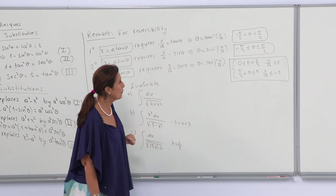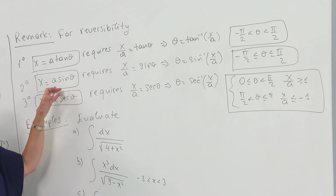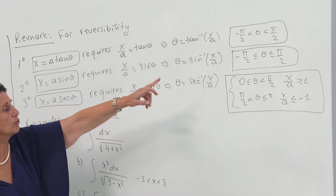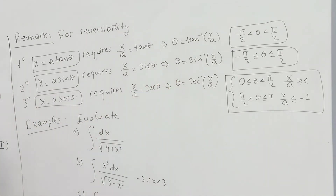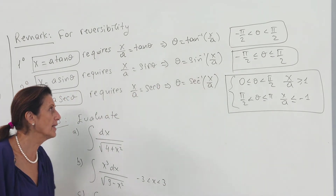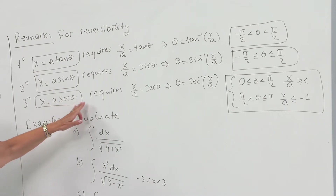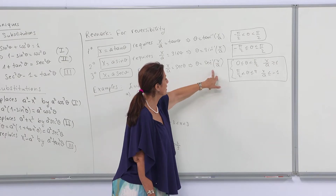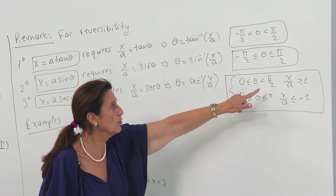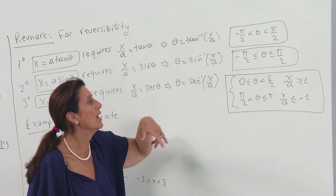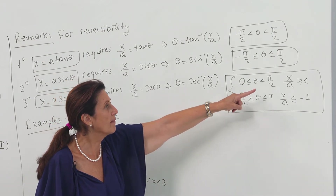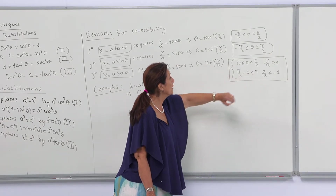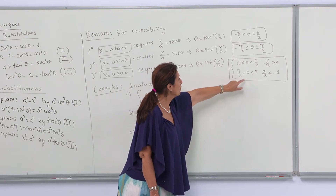Theta must be between −π/2 and π/2. The substitution x = a sinθ requires −π/2 ≤ θ ≤ π/2, which is the domain of inverse sine. And x = a secθ requires θ = sec⁻¹(x/a). The range of inverse secant goes from 0 to π/2 with no equality, since secant is not defined there, and when x/a ≤ −1, it ranges from π/2 to π.